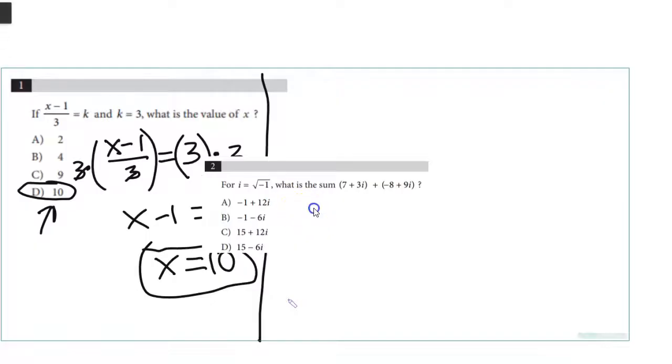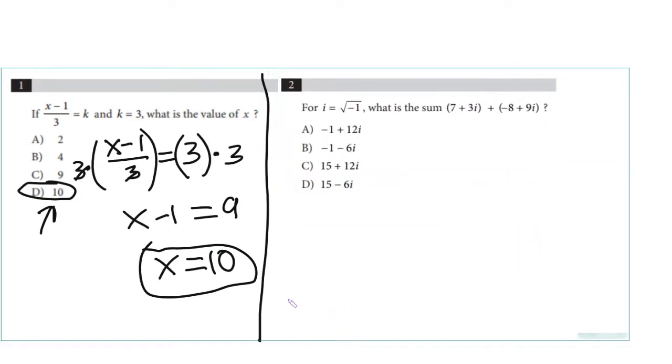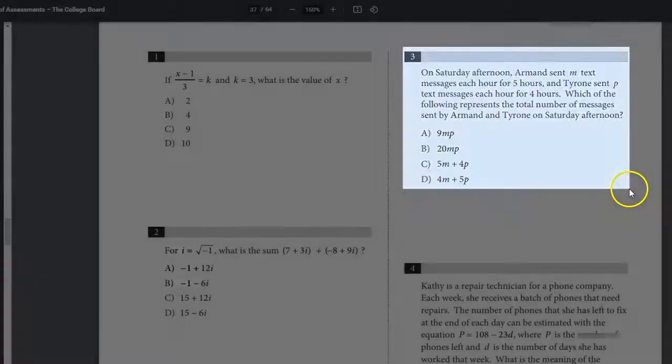Number 2: for i equals square root of negative 1, what's the sum of 7+3i plus negative 8+9i? We should add the real parts together and imaginary parts together. These are real and these are imaginary. That's going to be negative 1 plus 12i.